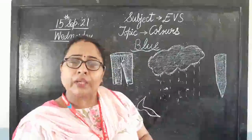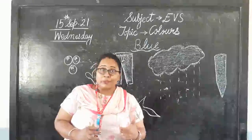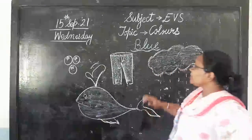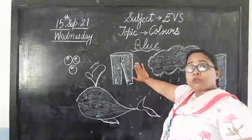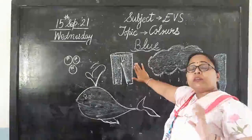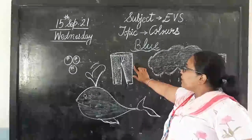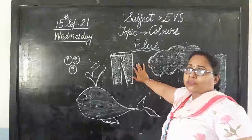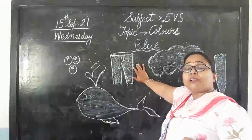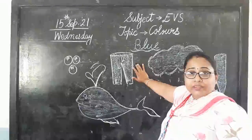Can you tell me about some objects that are blue in color? Let's see them. Have you ever seen a trouser that is blue in color? Everyone, of any age, wears this one trouser. Actually, it's not a trouser — we call it jeans. Jeans pant. You all wear it.